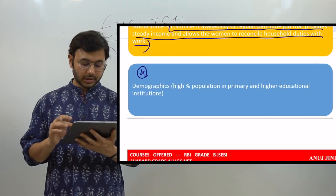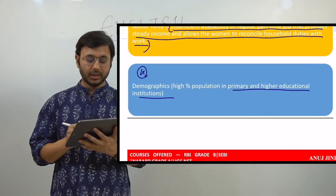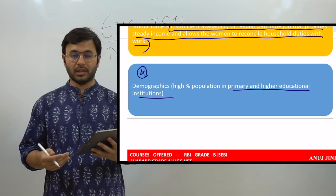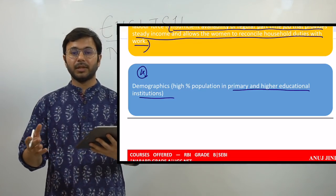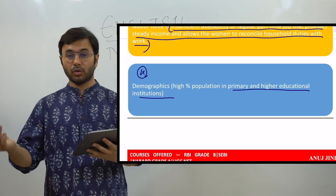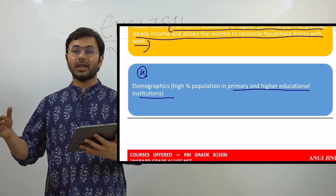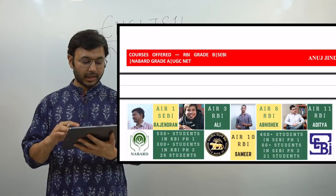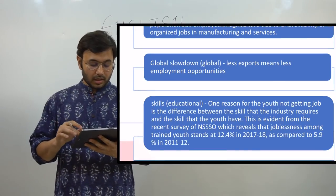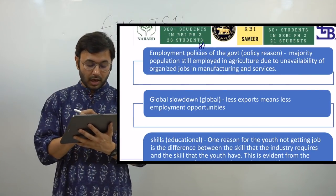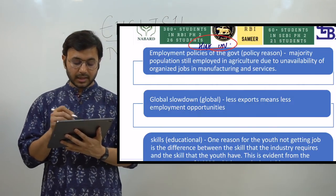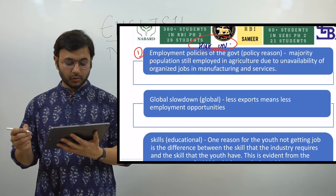On demographics — high percentage of population in educational institutions — this can be a controversial point for reducing LFPR because if yesterday there were 10 million people in the age group of 18 to 65, today there would be 10 or more. This will reduce or increase only after a significant period, perhaps one or two decades. Then we come to the reasons for high unemployment rate. What are the reasons that unemployment has increased by leaps and bounds in the past 4 to 5 years?